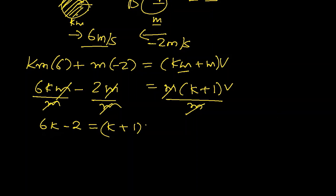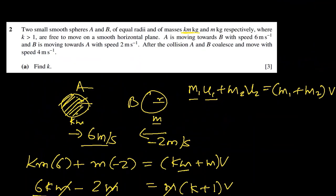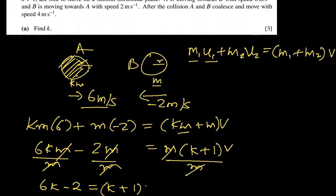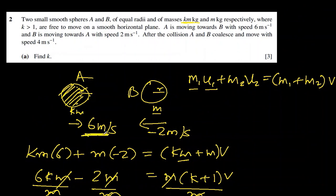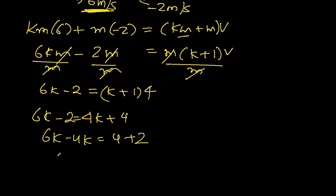V is known to us, it is 4 meters per second. Since it is faster and heavier, common sense says they will move in the positive direction. So now it is an equation in terms of K only. 6K minus 4K equals 4 plus 2. 2K equals 6 and K equals 3.